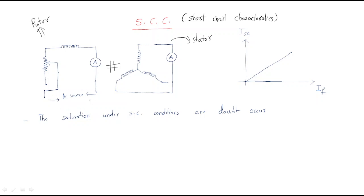The rotor is excited with a DC source — this is the rotor field. The stator is a three-phase circuit that is shorted. All three terminals are shorted through an ammeter. The relation between the field current and the short circuit current gives the short circuit characteristics.